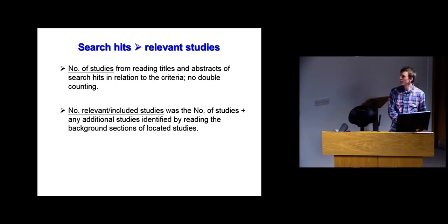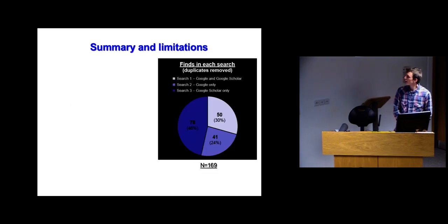How did I go from the search hits to the relevant studies? First, I got a number of studies from reading the titles and abstracts in relation to the inclusion criteria. I also read the background sections of the studies I'd found, and any studies mentioned here were also included. To summarize, in the first search it was 50, about 30%. The second one was about 25%. The last one was just under half. I got the most from looking at the researchers' names.